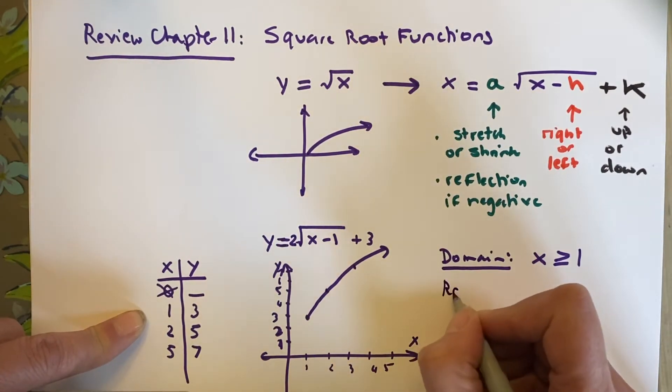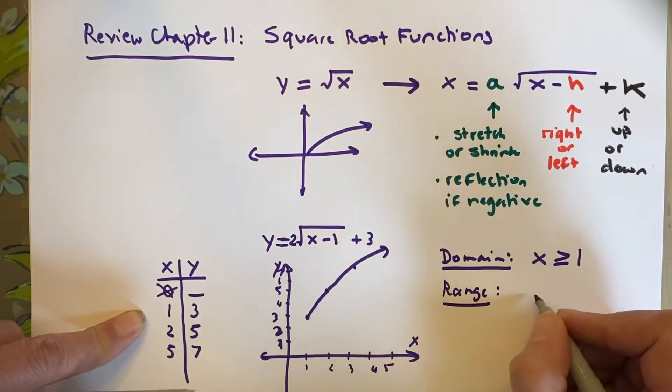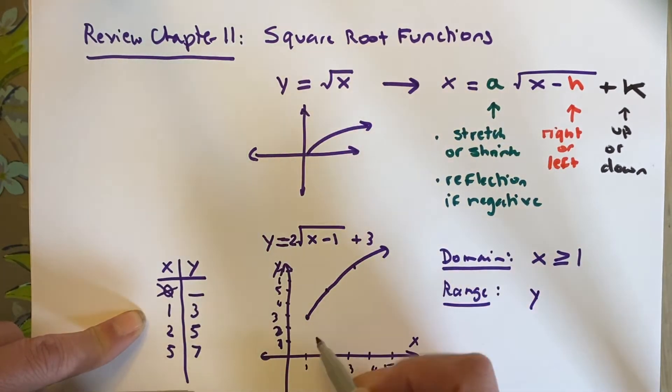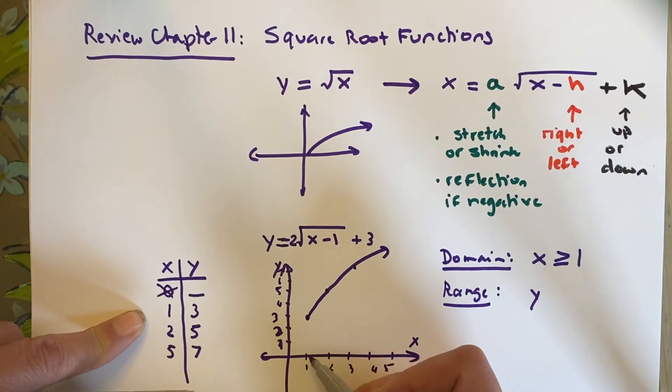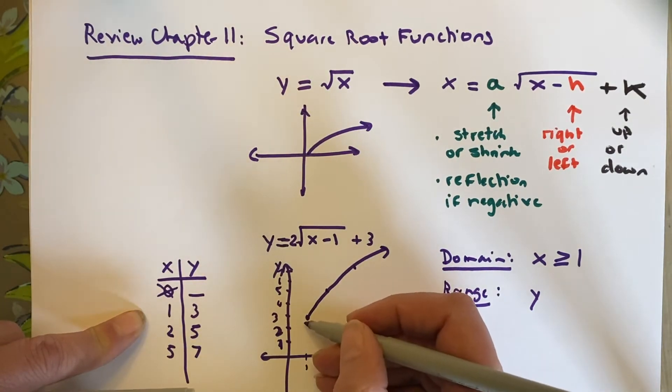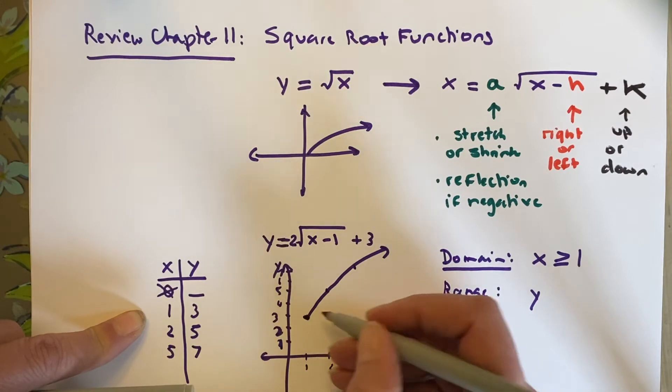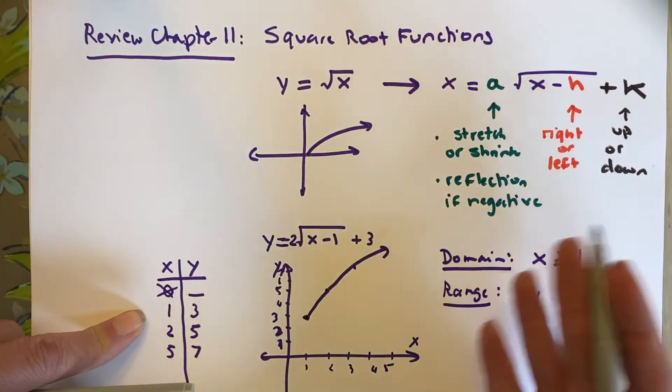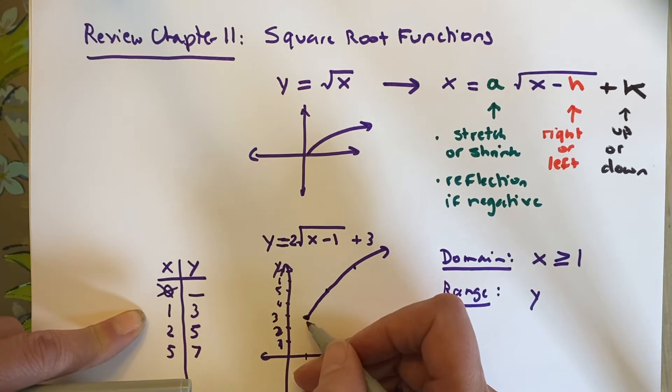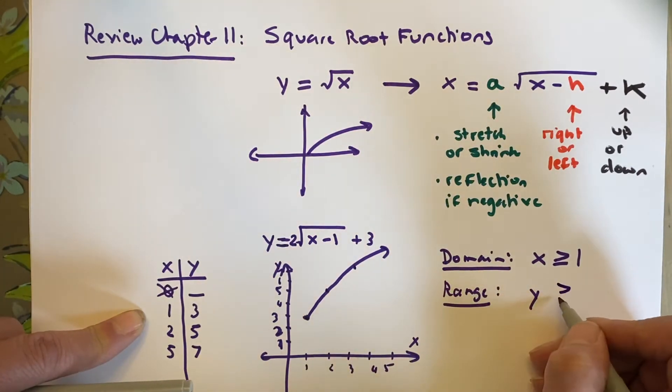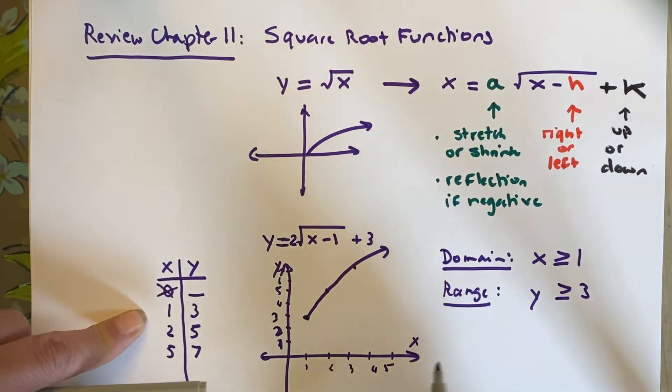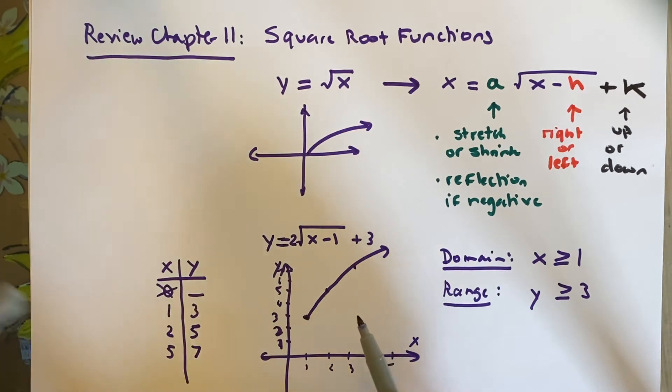For that domain, the range is going to be y is what? Where do the y's start? It cannot go below 3. So your y is greater than or equal to 3. That is your domain and your range. When you give me the graphs, you have to give me both the graphs and the domain and the range. This example is going to cover numbers 5 and 7 as part of your review.